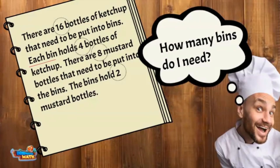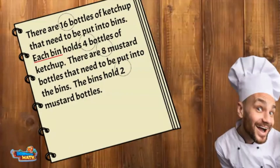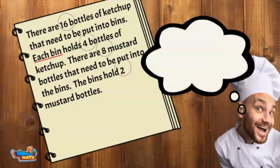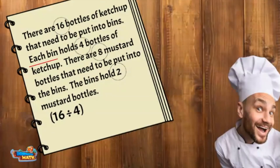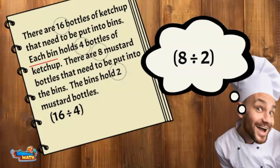I'm also going to underline the word 'each' — this tells me I need to multiply or divide. Starting with the ketchup: I have 16 bottles and four bottles can go into each bin. I write the equation as 16 divided by four. There are eight mustard bottles but only two bottles fit in each bin — I write this as the division problem eight divided by two.